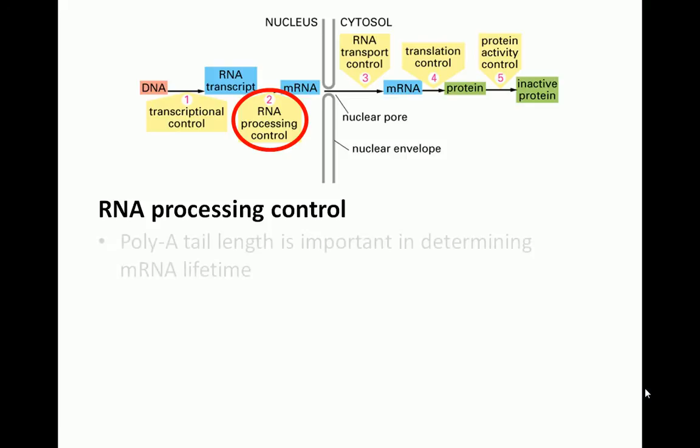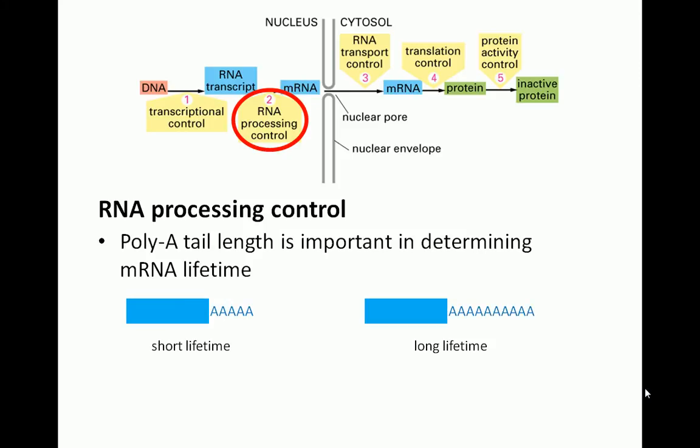RNA processing control can also be exerted via the poly-A tail. Recall that the poly-A tail is involved in protecting the coding regions of mRNA from being degraded in the cytosol. So, the longer the tail, the longer the mRNA is able to survive in the cytosol, and the greater the amount of protein that can be translated. Regulating poly-A tail length can therefore have a significant impact on the amount of protein translated.